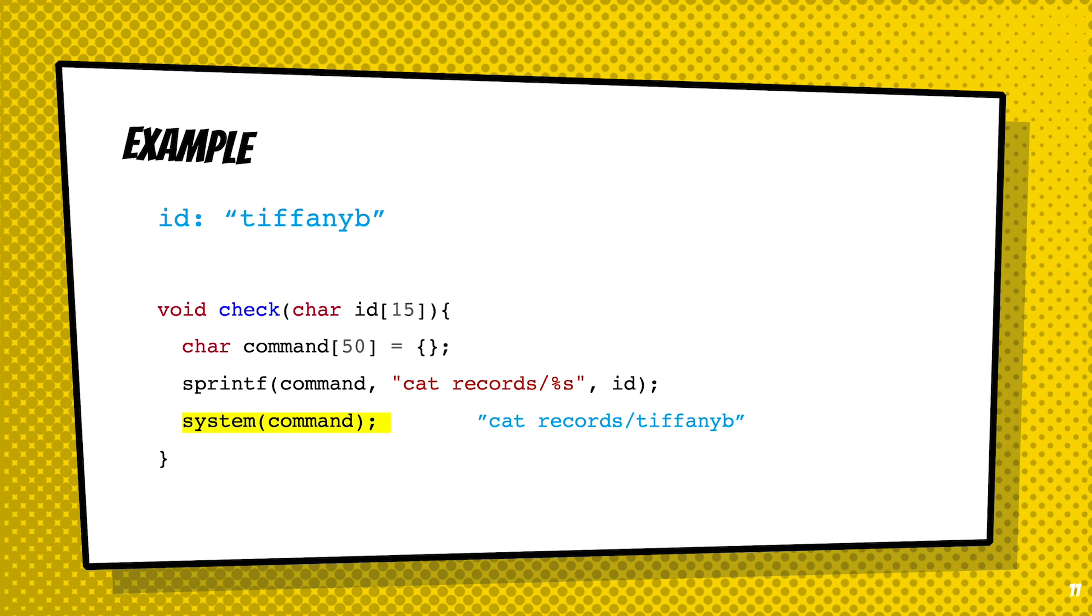However, if you abuse the string of ID, extending it with more bash commands, then when we call check and check calls system, it will execute both commands. So it will actually execute cat records/TiffanyB as well as cat secret.